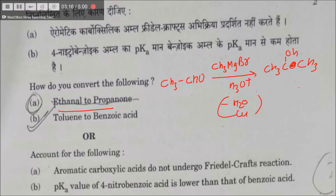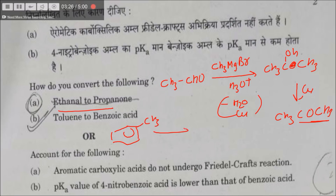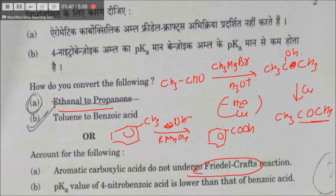Heating with copper gives CH₃COCH₃. Converting toluene to benzoic acid is easy — simply react the compound with alkaline KMnO₄ or acidic KMnO₄ to get benzoic acid. Aromatic carboxylic acids do not undergo Friedel-Crafts reactions because Lewis acids and carboxylic acids are ring deactivators.